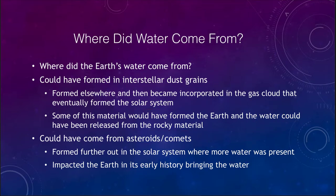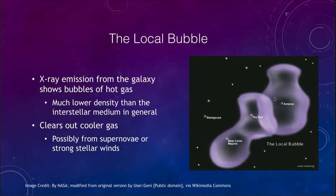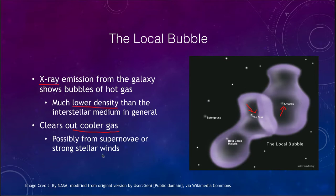The last topic in this section is what we call the local bubble. Looking at x-ray emissions from the galaxy, we find that there are bubbles of hot gas that have cleared out — regions of much lower density than normal in the interstellar medium. Our Sun and the bright star Antares in Scorpius are examples of stars located within these areas where material has been pushed away and the cooler gas has been cleared out, possibly through a supernova explosion that sent a big shockwave outward and cleared out a large bubble.